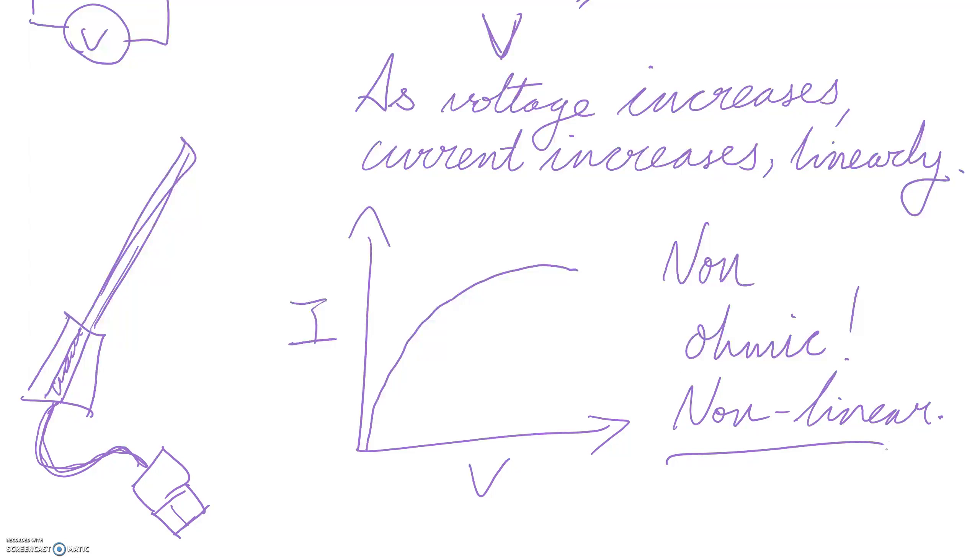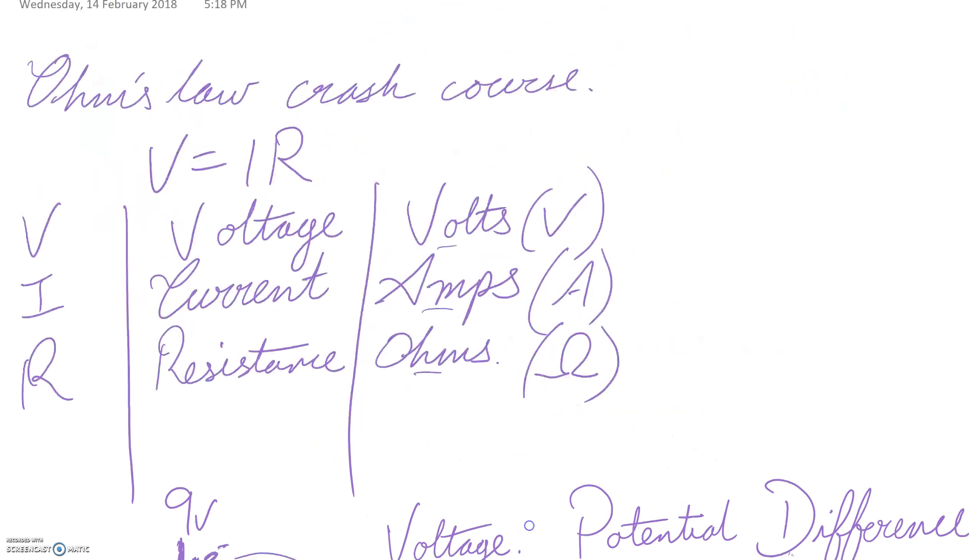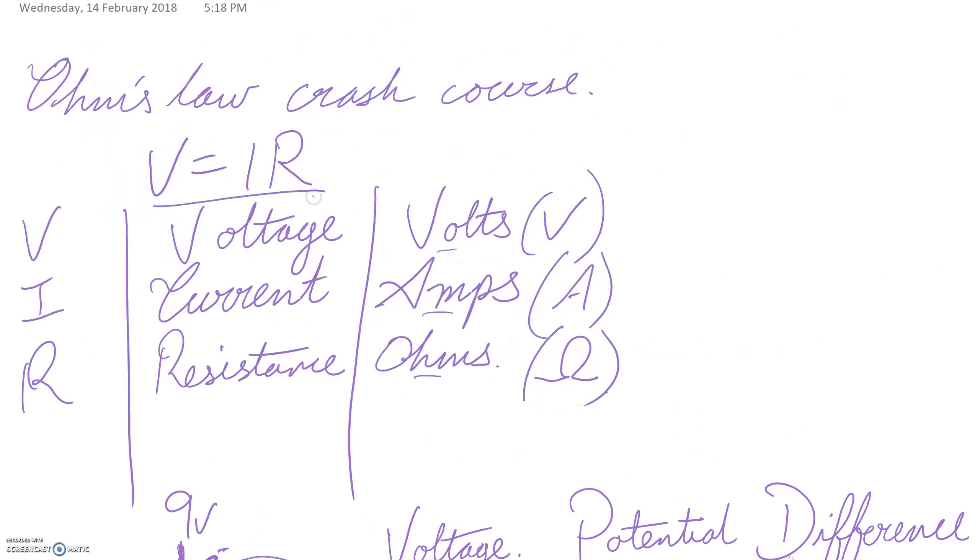Hopefully I did make that in 10 minutes. Either way, let's recap very quickly. Ohm's law. V equals IR. Remember it. Internalize it. You'll use it for most of this topic. V stands for volts. I stands for current. R stands for resistance. V we use units of V for volts. I we use units of A for amps. R we use units of omega for ohms.